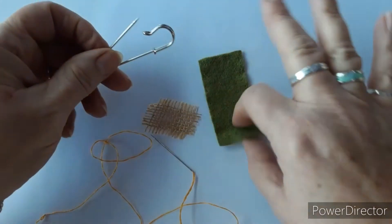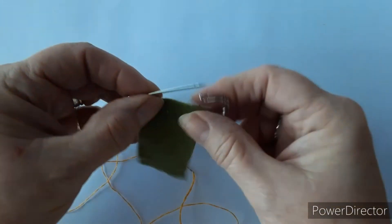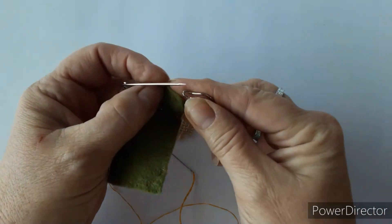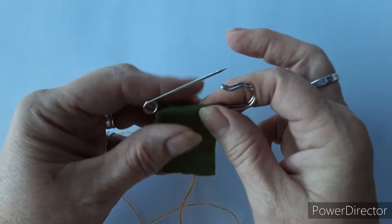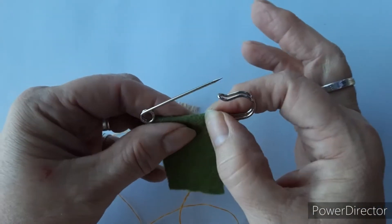So we're going to wrap the felt around the bottom piece of the kilt pin that doesn't open, and we're going to secure that with a pin.